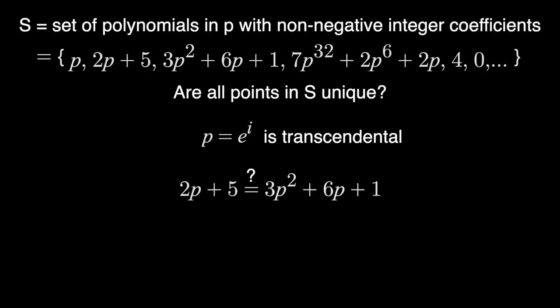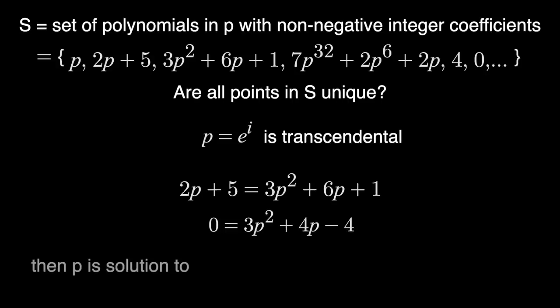Without getting too rigorous, the idea is, if, let's say, these points were in fact the same, and this equality is true, then we can move everything to one side, and this must be true too. If this is true, then P, which, remember, is just the number e to the i, is the solution to this polynomial. Same thing as above, but with x's. But we just said e to the i is transcendental. It cannot be the solution to this polynomial, or any polynomial with integer coefficients. So we get a contradiction, and thus every element in S is unique. That's the idea.